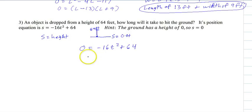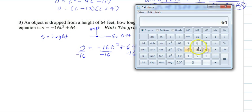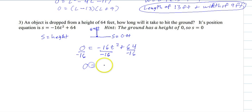So let's factor it. In fact, there's a nice little trick. We're going to divide by negative 16 this time. Because they all contain a 16. What's 64 divided by 16? 4. So we will get 0 equals t squared minus 4.